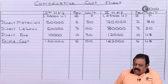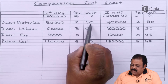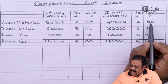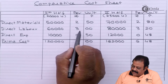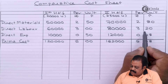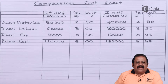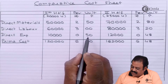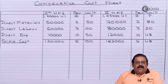We can compare cost per unit. Direct material per unit in the first half was ₹2.50; in the second half it is ₹2.80 — an increase. Direct labor was ₹3.00 per unit in the first half and ₹3.20 in the second half — also an increase. Direct expenses: first half 50 paise, second half 48 paise — a decrease in direct expenses per unit.